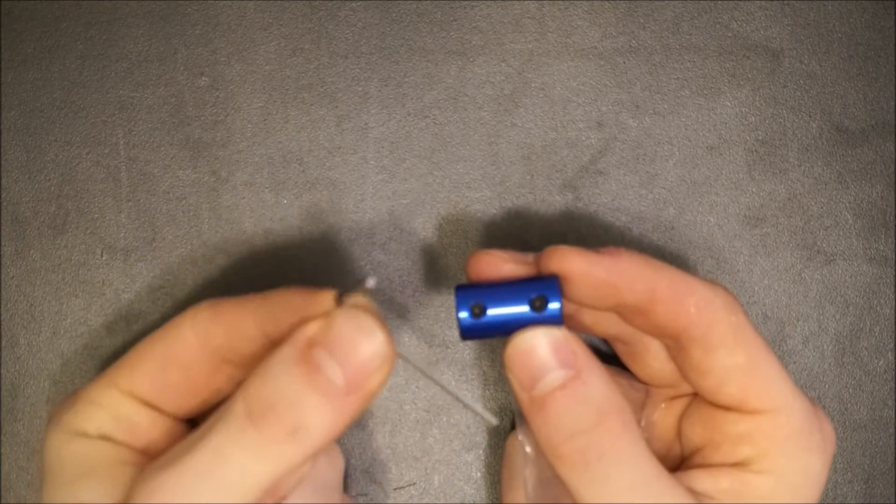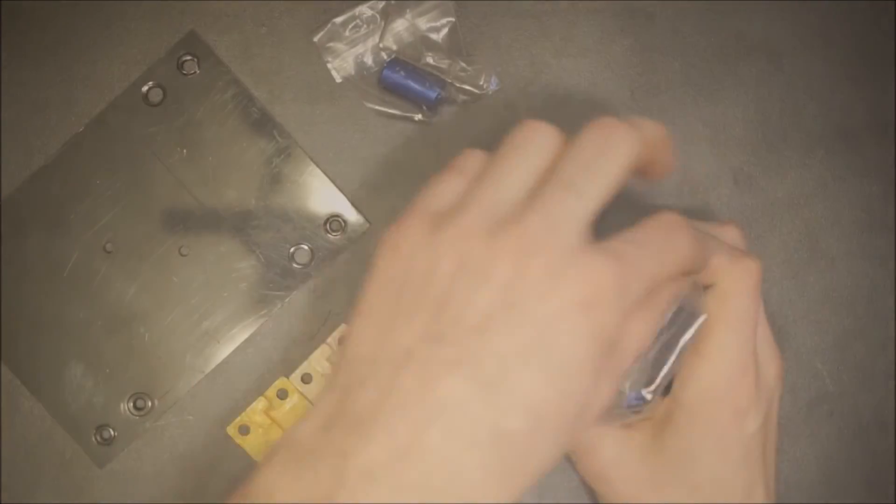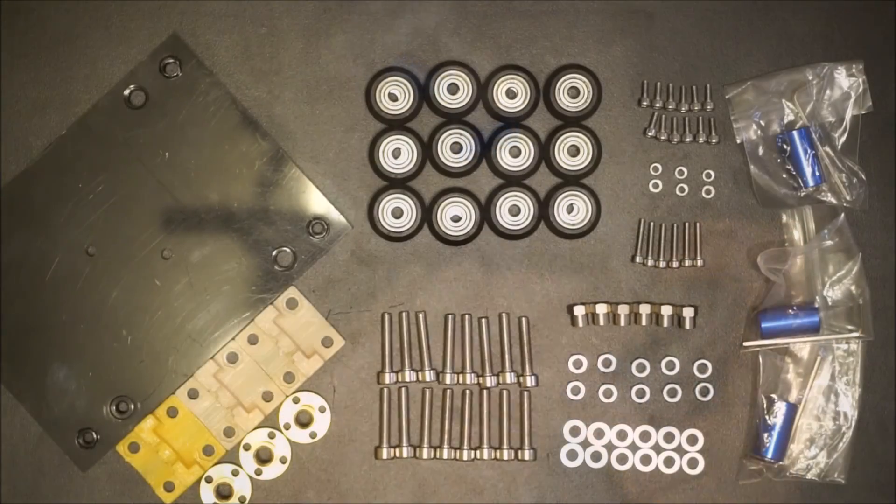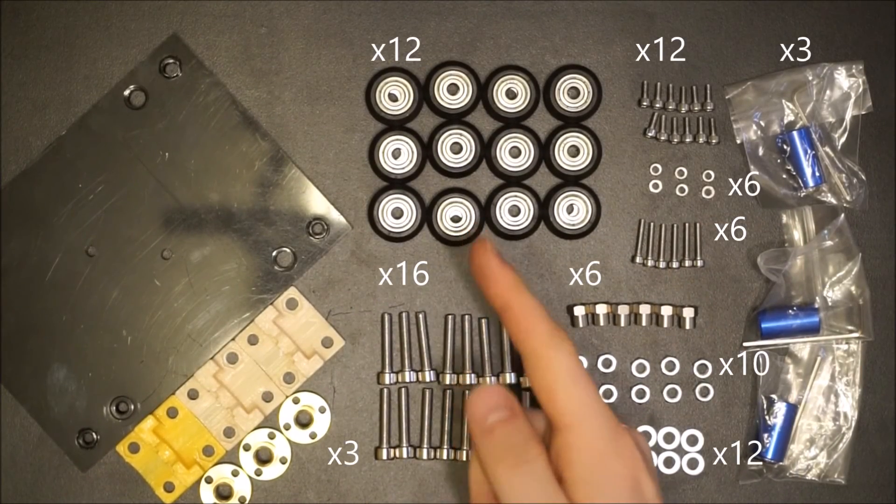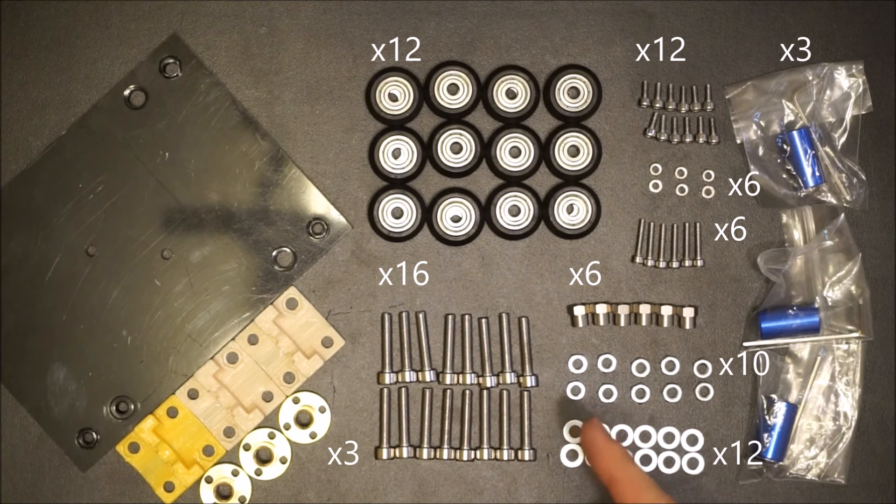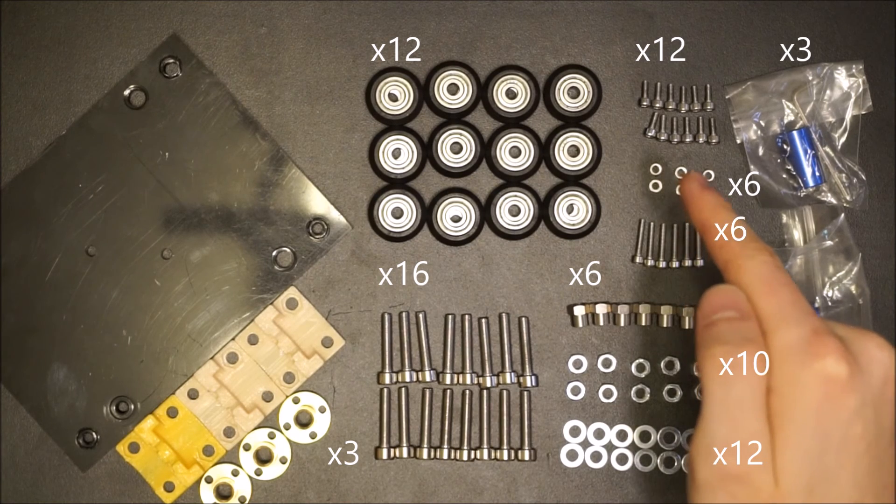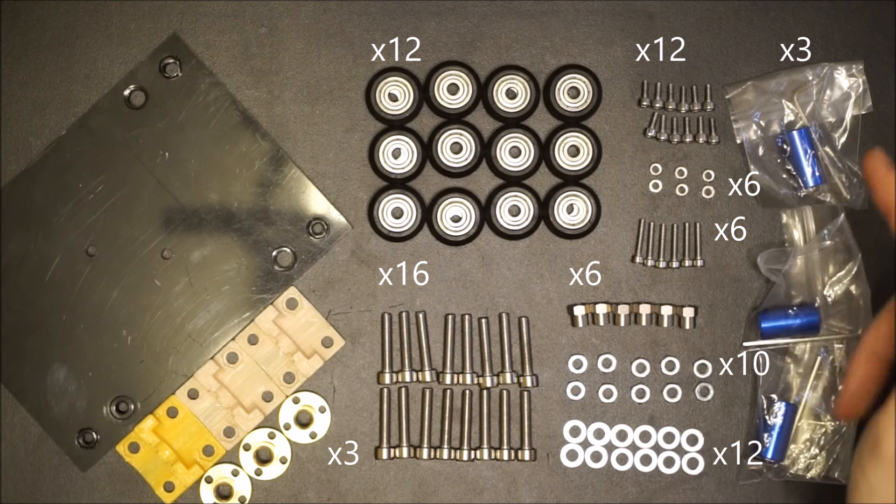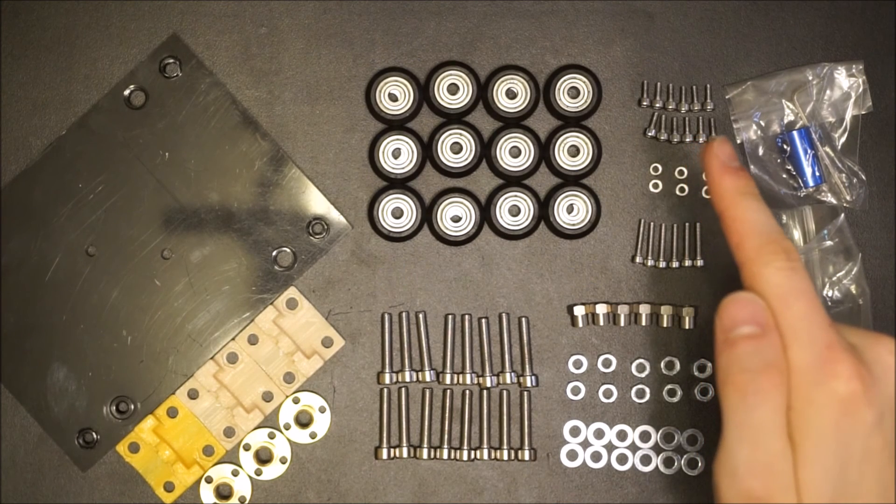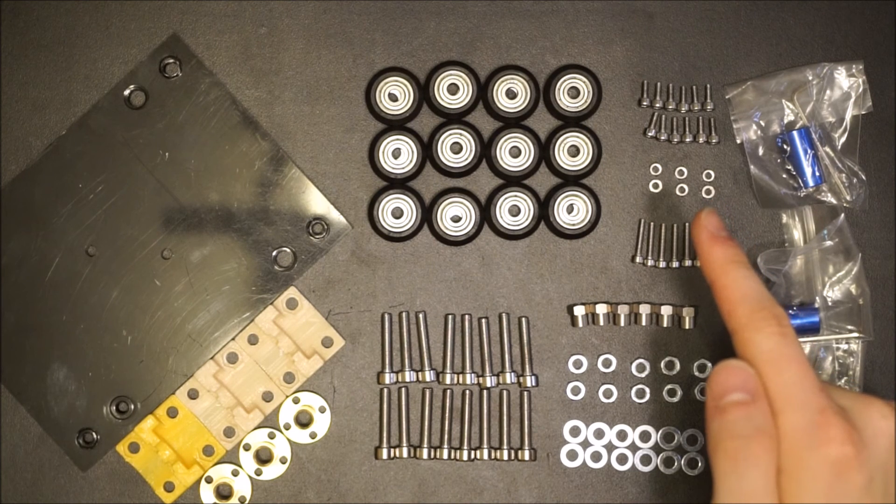You won't need an Allen key to tighten the coupler since it comes with its own Allen key. When you unpack the rail system hardware bag, you should find the V-groove bearings, M5 bolts, lead screw nuts, M5 washers, M5 nuts, eccentric nuts, long M3 bolts, M3 nuts, short M3 bolts, and three bags with the couplers. You might also notice some additional short M3 bolts and nuts are included in case you misplace them.